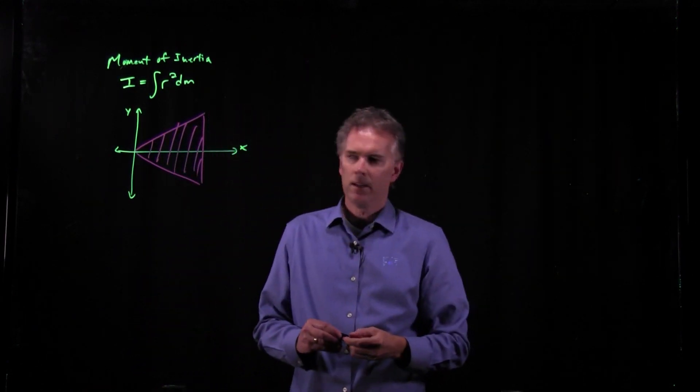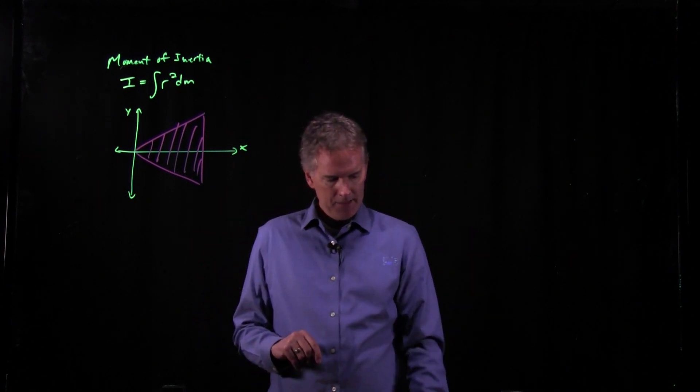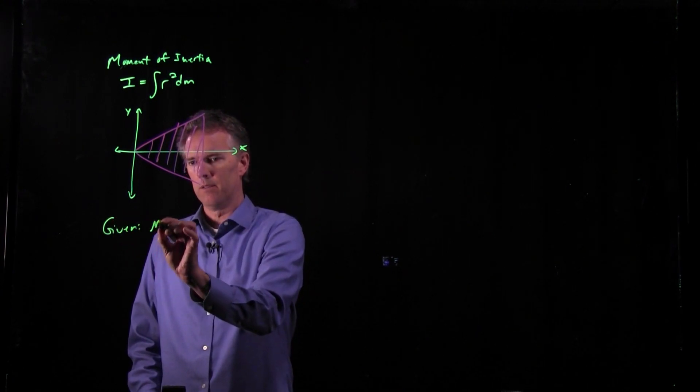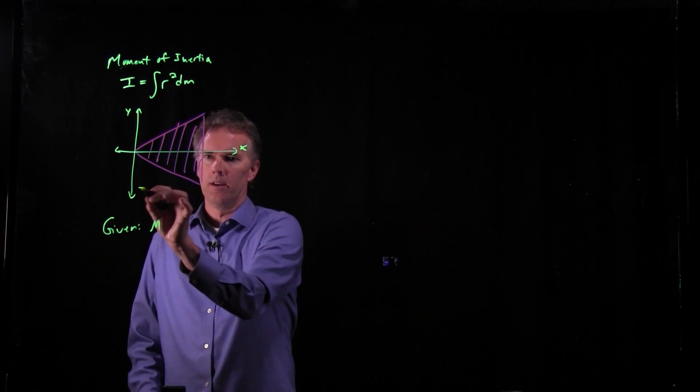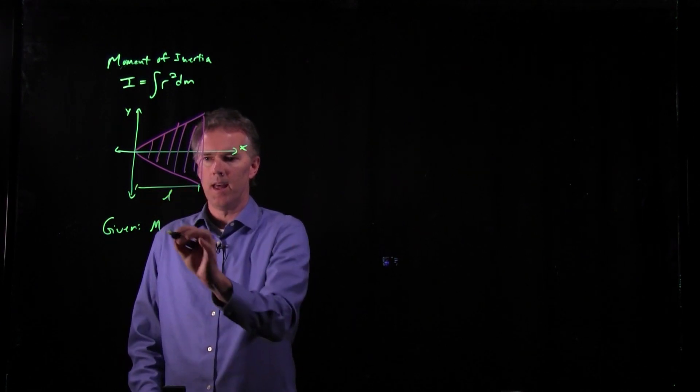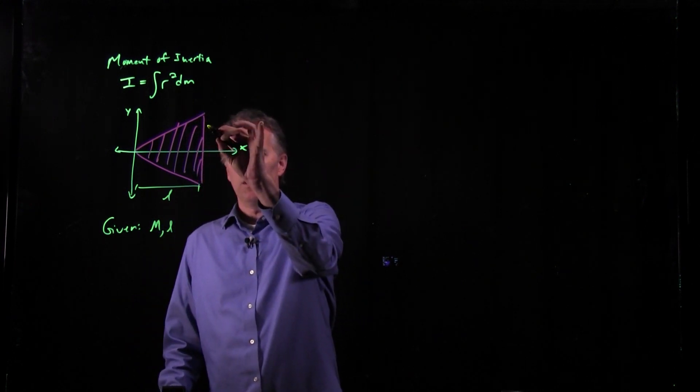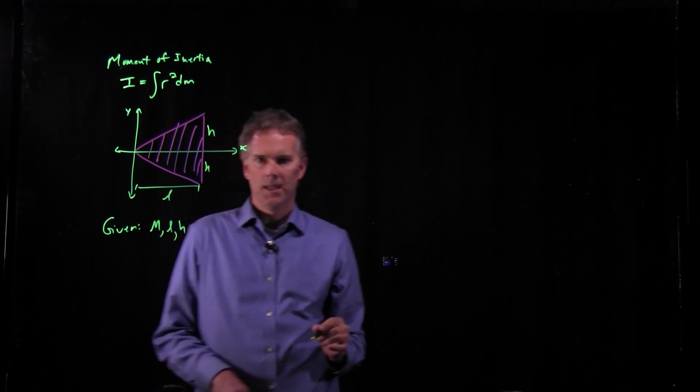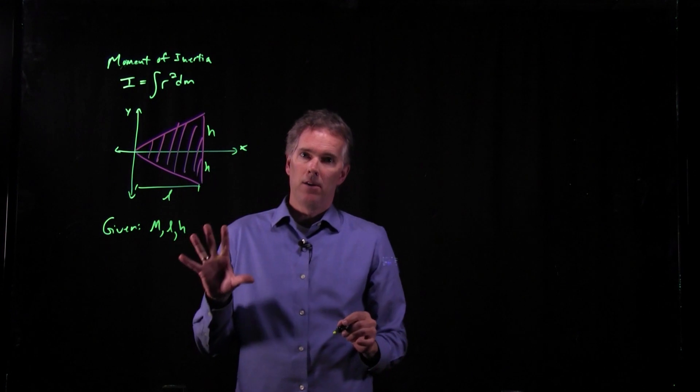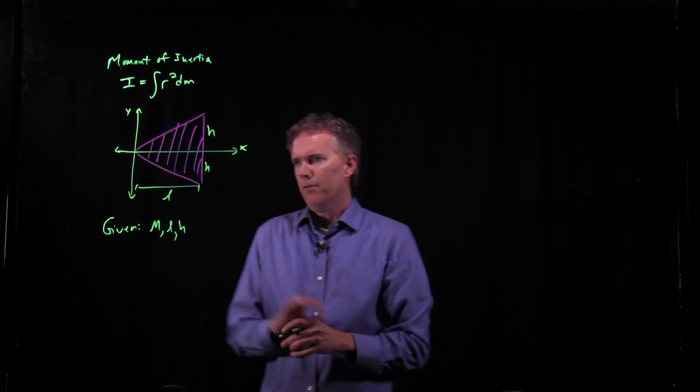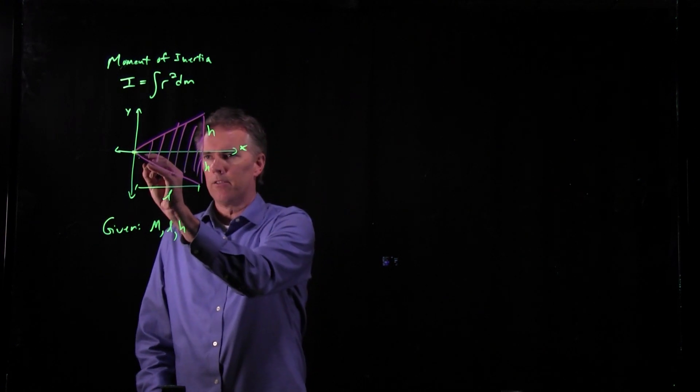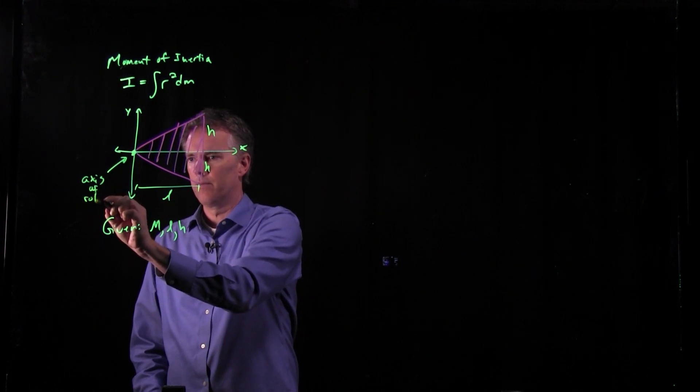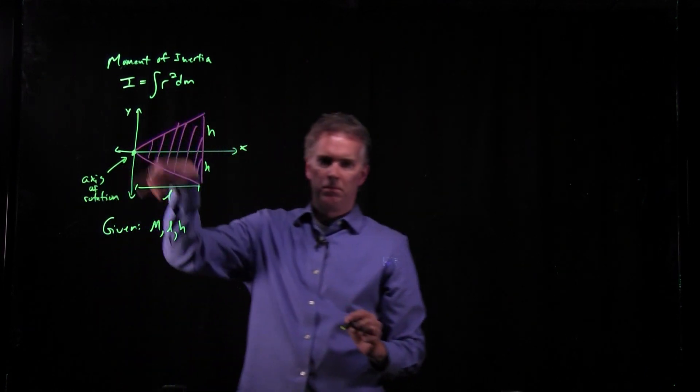It's a piece of metal that's cut into this triangular shape. And how do we calculate the moment of inertia for that? Let's say we are given the mass of the plate, how far it extends this way (we'll call that L), and how far it extends up (h) and down (h).